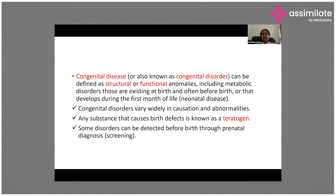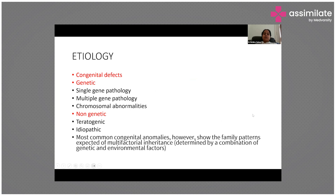Some disorders can be detected before birth through prenatal diagnosis screening, but not all. Coming to etiology, congenital defects are divided into genetic and non-genetic. Genetic causes include single gene pathology, multiple gene pathology, and chromosomal abnormalities. Non-genetic causes include teratogenic and idiopathic. Most common congenital anomalies show family patterns of multifactorial inheritance — a combination of genetic and environmental factors.